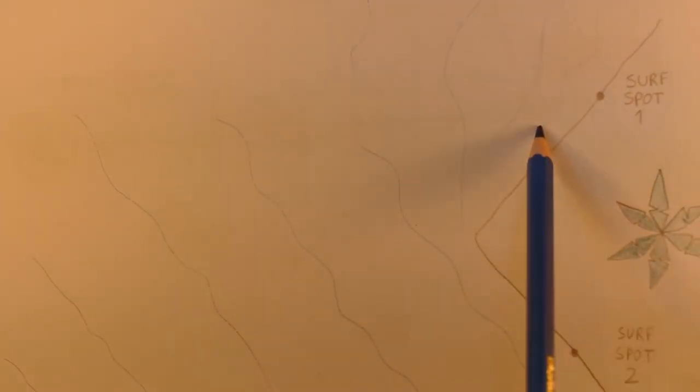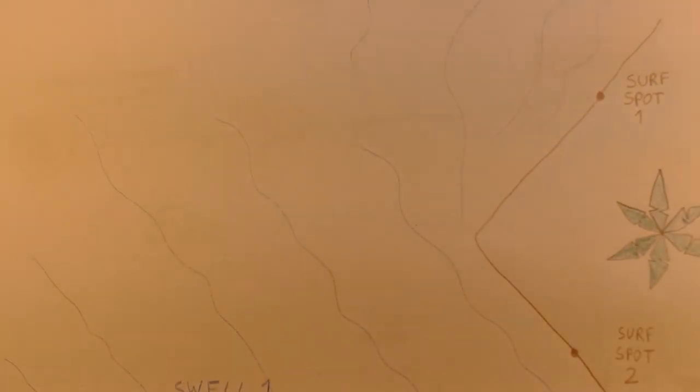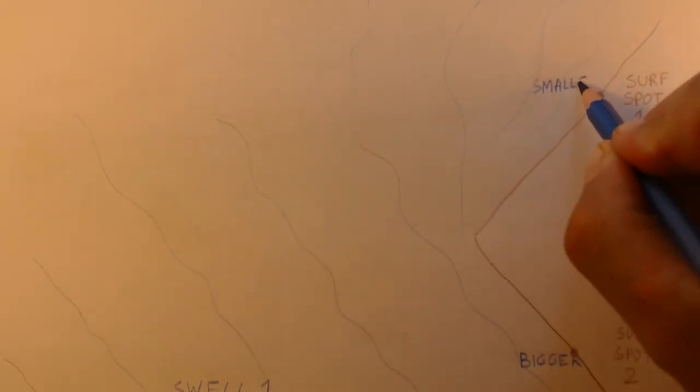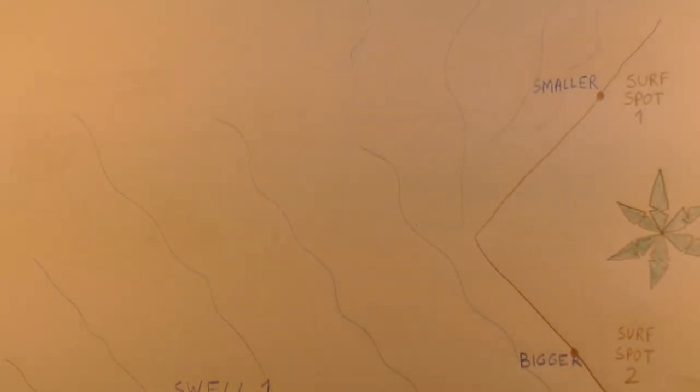Swell direction is really important. If we've got a three foot swell traveling directly to the beach we want to surf, we might actually get three foot waves. However, if that swell is not traveling directly to the beach we want to surf, then the likelihood is all of that swell isn't going to reach the beach.